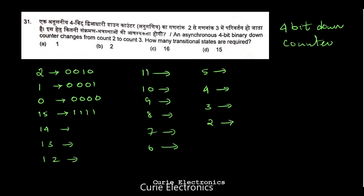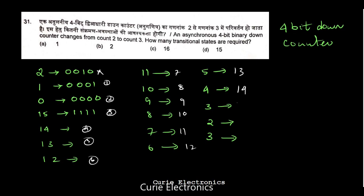We need count 2 to count 3. From count 2, the next state is 3. Counting the state changes — since 2 is the starting state we don't count it — we count: 1, 2, 3, 4, 5, 6, 7, 8, 9, 10, 11, 12, 13, 14, 15. On the 15th state change it has reached 3.